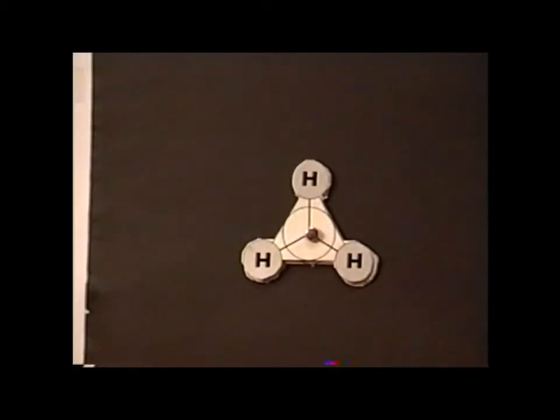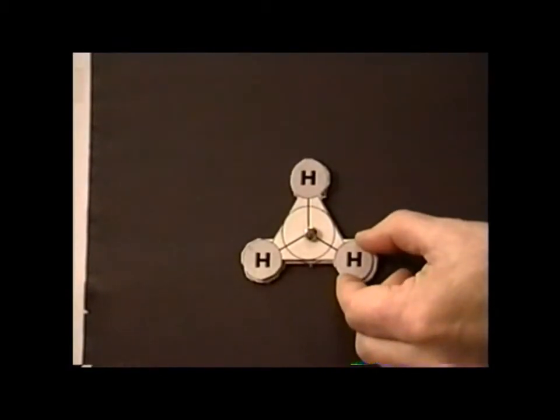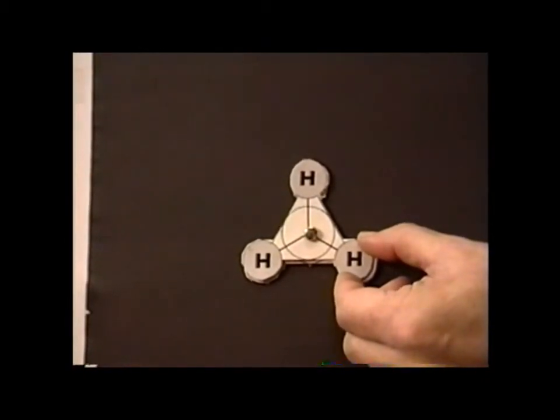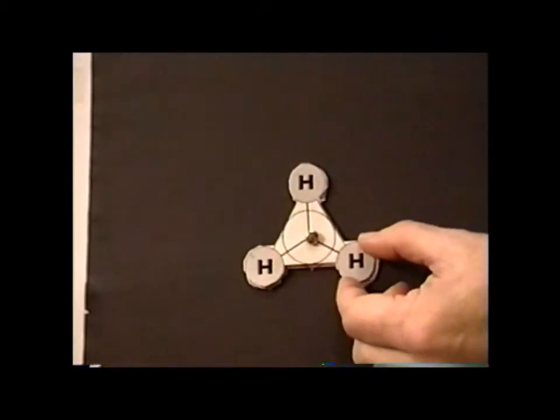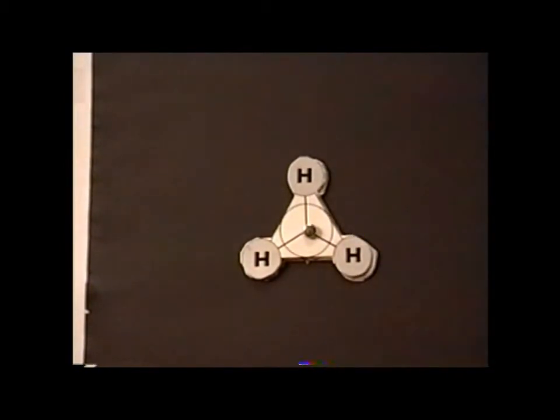And even starting with the Newman projection, we recognize how similar this looks to the models that we had used before to show for the trigonal case of D3H all the way back in episode 2. And we will show even more complicated models to demonstrate the symmetry properties of D3H in the eclipsed conformation of ethane.